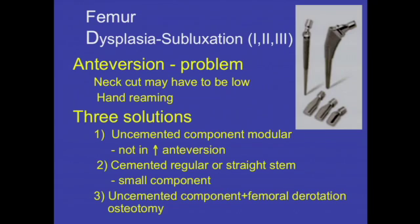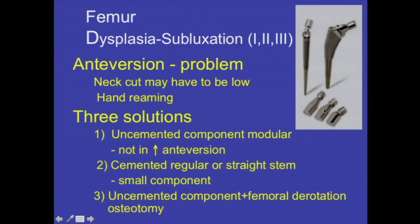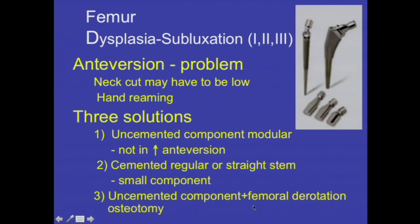On the femoral side in dysplasia types 1, 2, and 3, the main problem is increased anteversion. You may have to perform a neck cut down to the calcar or near the lesser trochanter to avoid excess anteversion. There are three solutions: use a modular uncemented component where anteversion can be adjusted — though increased modularity carries risks of metallosis and unknown long-term outcomes; use a cemented stem where you can adjust anteversion, vertical offset, and horizontal offset; or use an uncemented femoral component with a femoral derotation osteotomy if significant deformity is present.